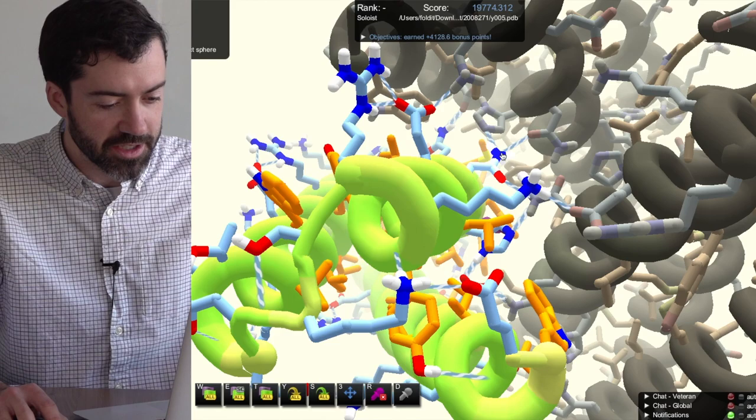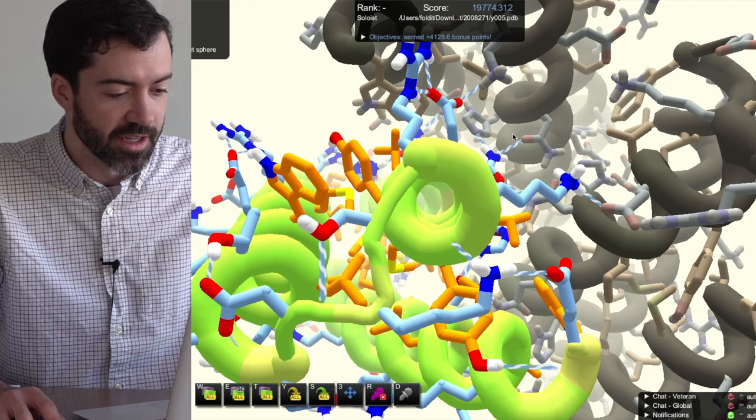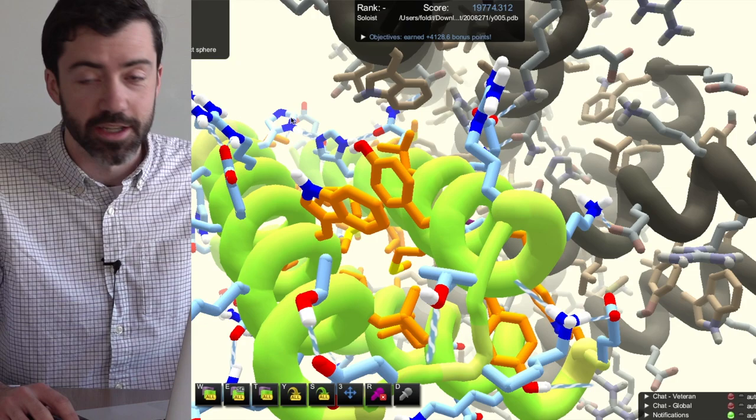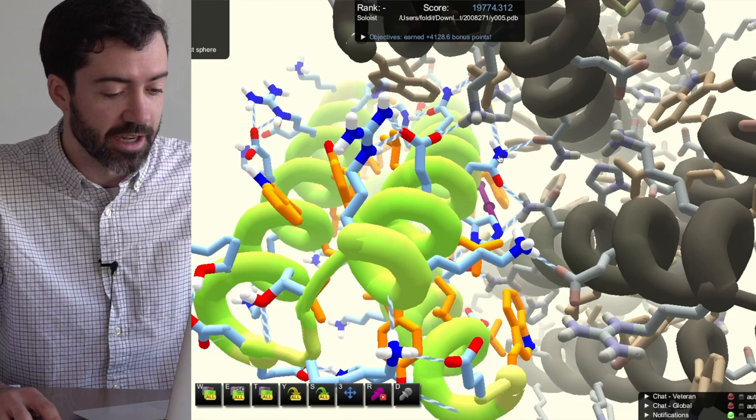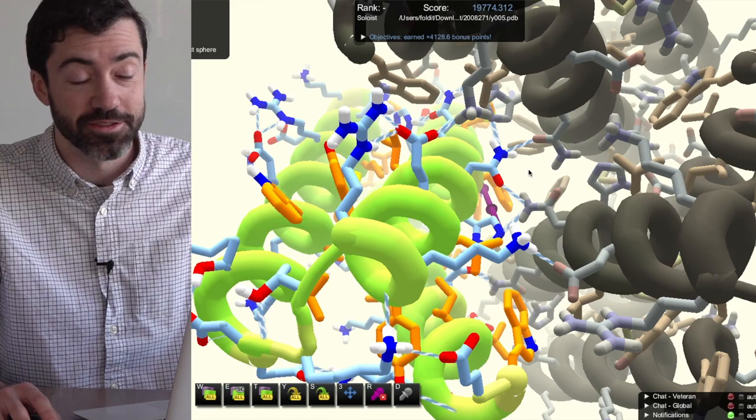So we have all of these buried polar atoms that need to make hydrogen bonds, and they are. They're making all the necessary hydrogen bonds, and this network spans out to the surface of the protein, where water can finish off and make the rest of the hydrogen bonds. What makes this hydrogen bond network nice is that all of the polar atoms are satisfied. It's not necessary that a hydrogen bond network be this complex or this huge, but oftentimes it is necessary in order to satisfy all the hydrogen bonds.